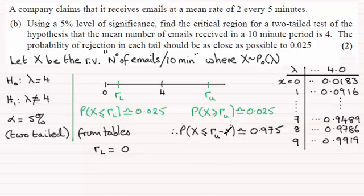And from the tables here, which of these values is closest as we can get to 0.975? Well, looking at this, it's clearly got to be eight. So we've therefore got RU minus one, the upper critical value minus one, has got to equal eight. And it follows from this that the upper critical value has got to be nine, eight plus that one.